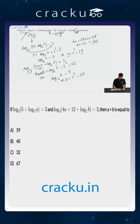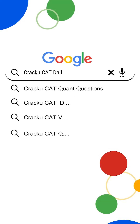Now we calculate A plus B. The value of A is 27 and the value of B is 32, therefore A plus B equals 27 plus 32, which is equal to 59. So the answer in this case is 59. If you want a structured daily practice plan, go to Google and search Crack the CAT daily targets.